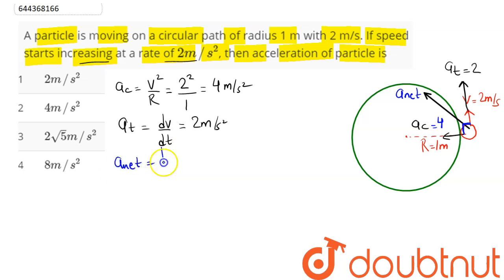So net acceleration can be written here as under root of AC square plus we have here as AT square which is equal to square root of we can say as 4 square plus 2 square which is equal to root under 20 which here is equal to 2 root 5 meter per second square which is our option number 3. Hence, we can say the net acceleration of particle is 2 root 5 meter per second square hence option 3 is the correct answer.